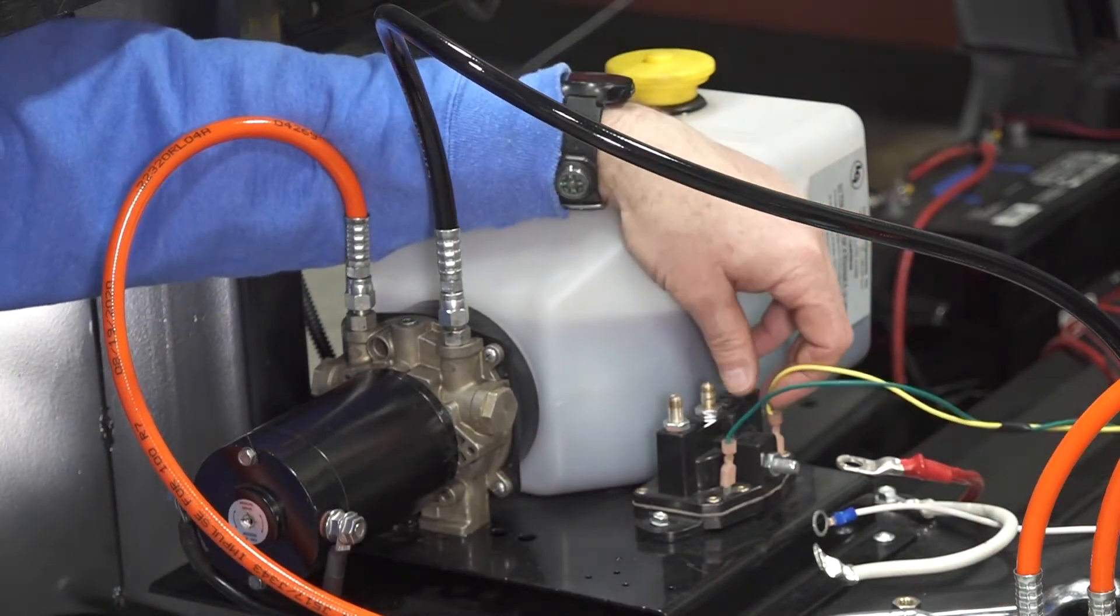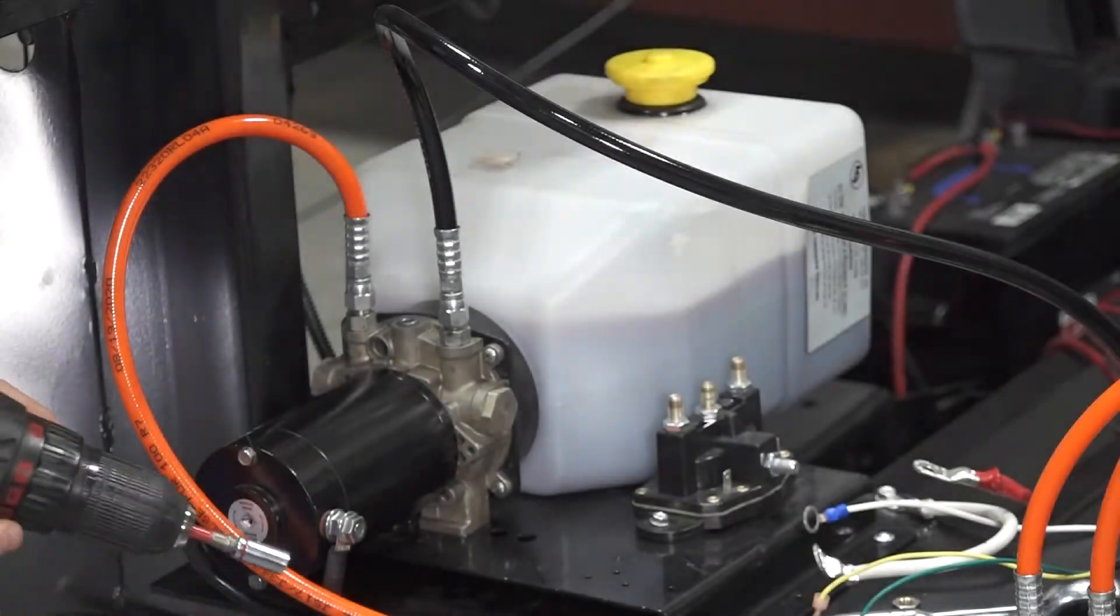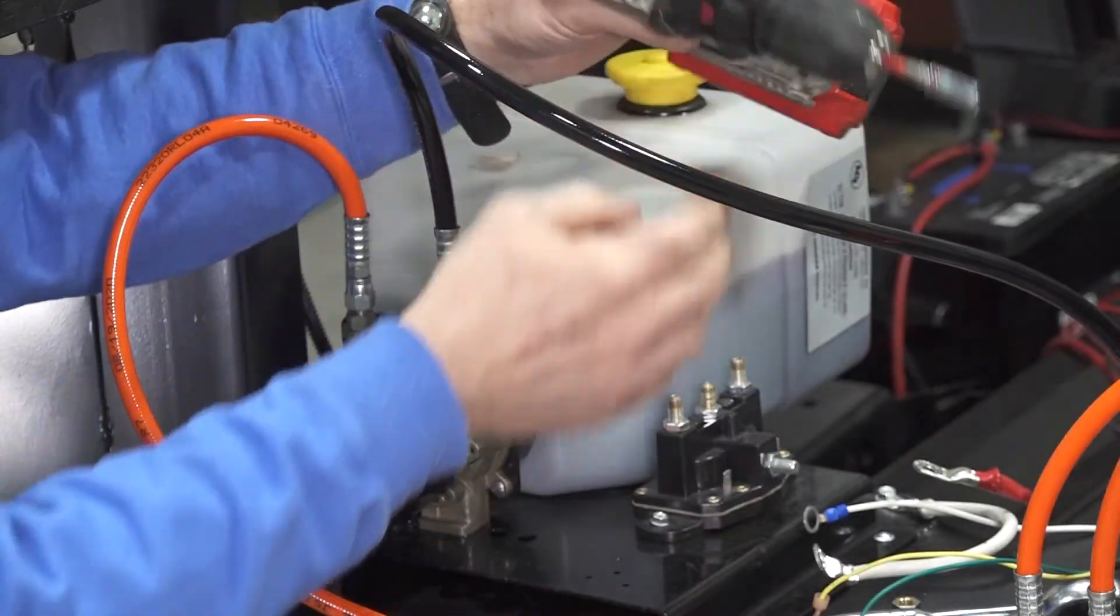Remove the green extend wire and yellow retract wire from the spade terminals on the solenoid. Now you can remove the mounting screws and remove the solenoid from the power unit.